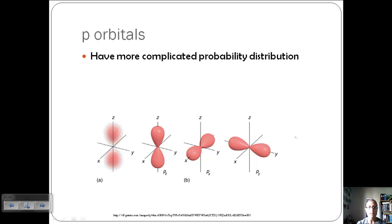Then we went to the p subshell. These have a bit more complicated probability distribution, and they have positives and negatives depending on what axis they are inhabiting. We've got p sub z, p sub x, and p sub y. And they kind of look like a bowling pin or two lobes.